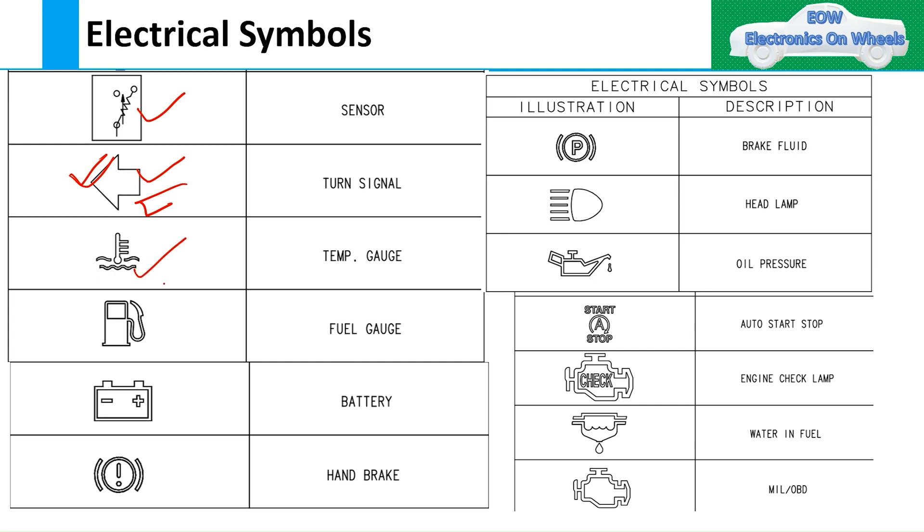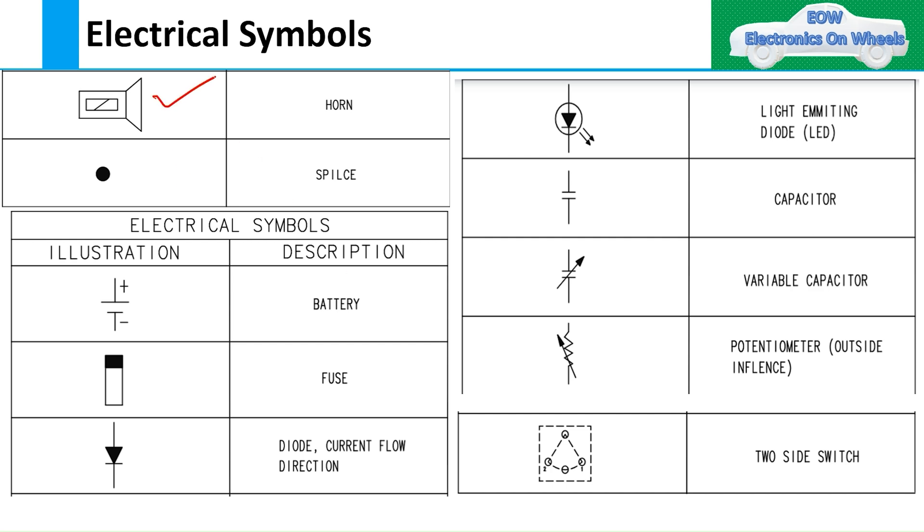Then temperature gauge, fuel gauge, battery, handbrake, brake fluid, headlamp, oil pressure, start-stop, engine check lamp, water in fuel, mil - these are all the symbols. Then you might see the horn, then splice. Splice is nothing but the joint. We'll see those things also. Then we have the battery symbol - whatever you've seen in the cluster will be shown in the diagram. Then you have the fuse. This has been shown because these are old electrical symbols, but now you might have seen the fuse symbol looks like this.